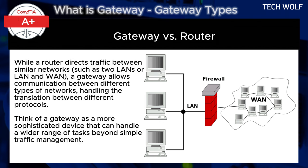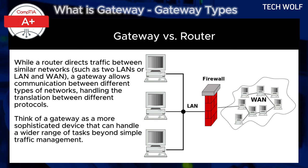Here is a comparison of a gateway with a router. While a router directs traffic between similar networks, such as two local area networks, a gateway allows communication between different types of networks, handling the translation between different protocols. Think of a gateway as a more sophisticated device that can handle a wider range of tasks beyond simple traffic management.